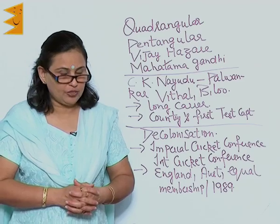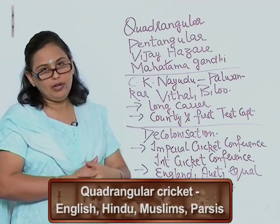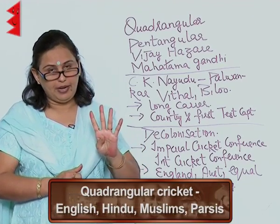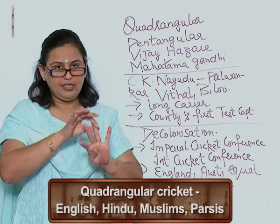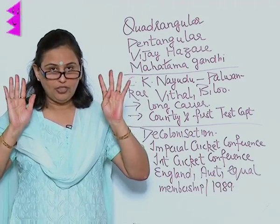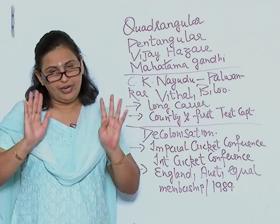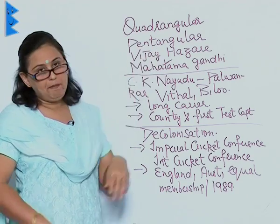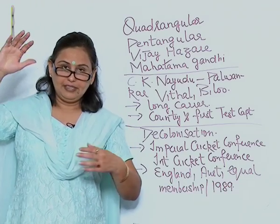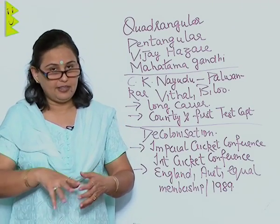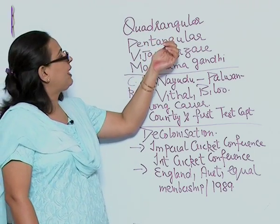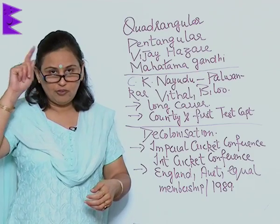The game of cricket was called quadrangular cricket in the beginning because four teams played: the English, the Parsis, the Hindus, and the Muslims — which we have already seen about the jimkhanas and the oriental clubs. Then it became pentagular in nature, as a fifth team was added: the rest of the Indians, including Christians and other communities.